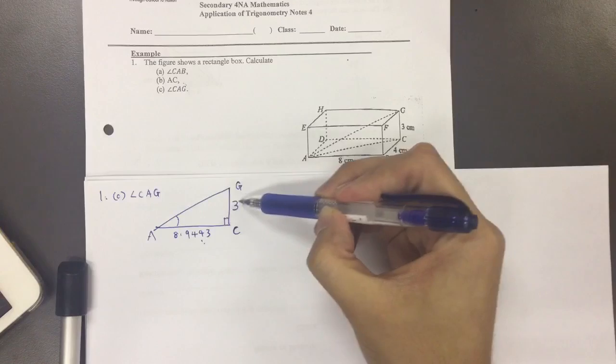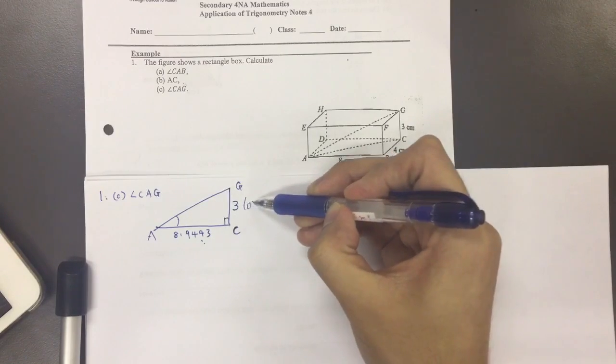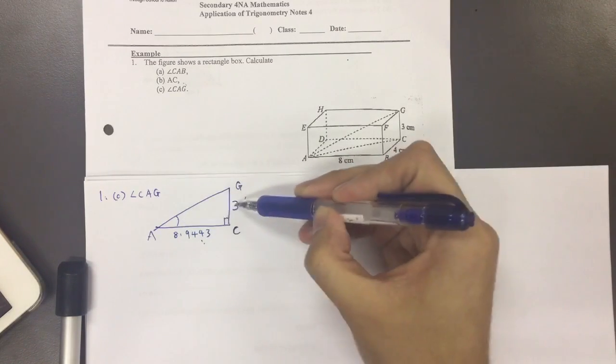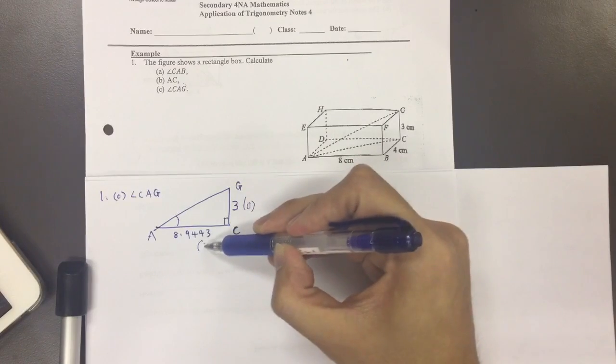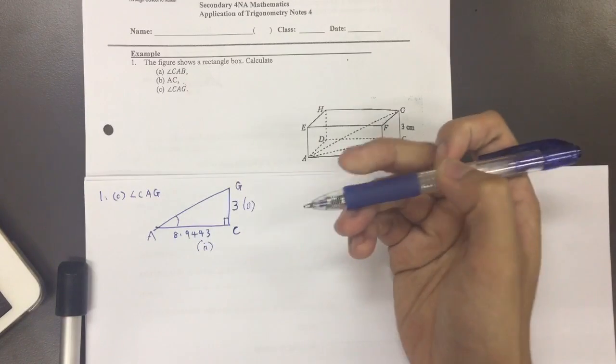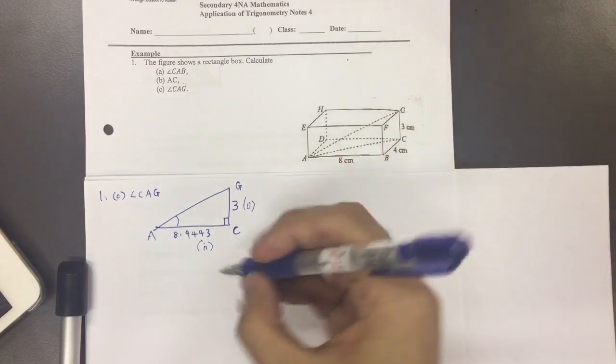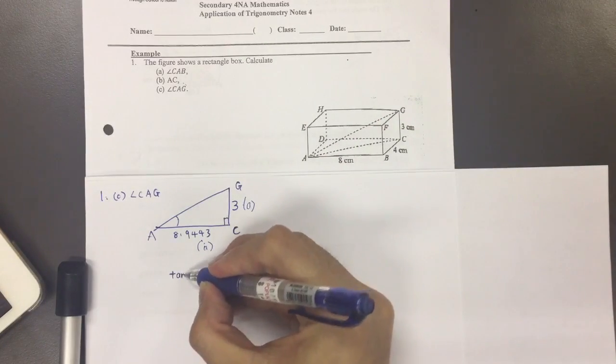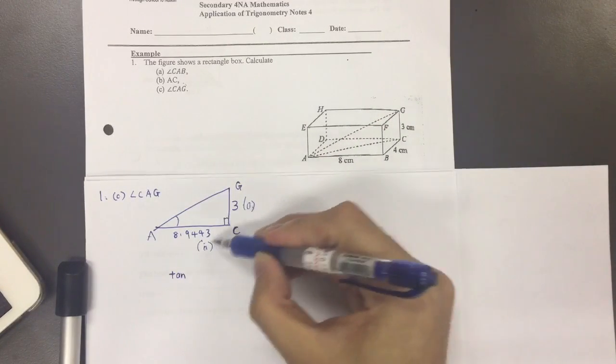Yes, okay. So this side is actually opposite to the angle we want or we are using, and this side is adjacent to this angle. So this is a right-angled triangle, so we are using SOHCAHTOA. In other words, tangent because of O and A.